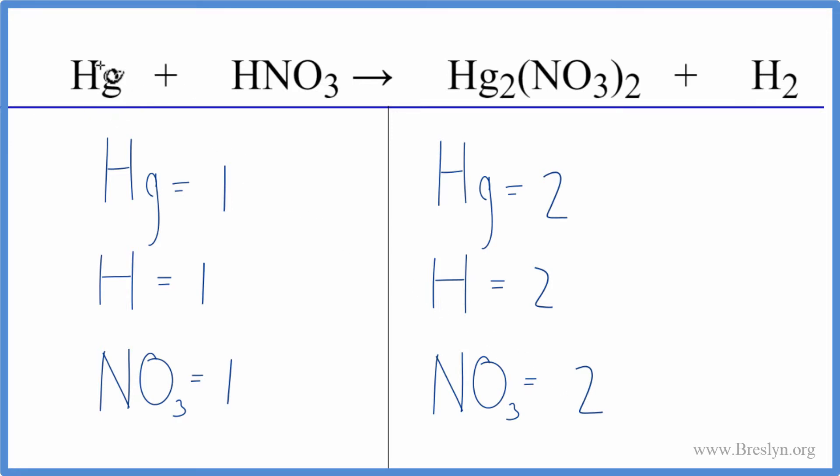Let's leave the mercury until last. It's by itself. And the hydrogen as well. Let's focus on the nitrate. We have two here and one here. So we can put a two in front of the HNO3, the nitric acid.